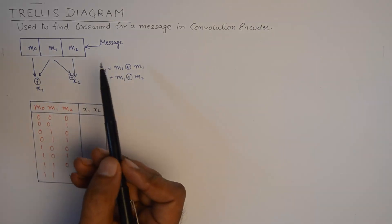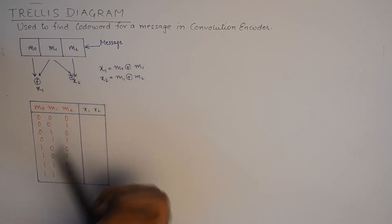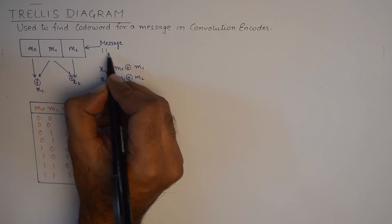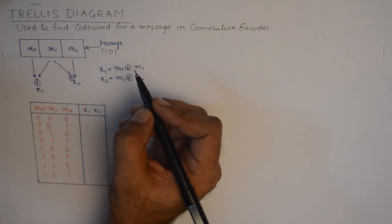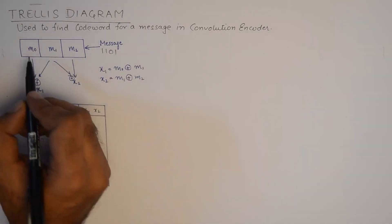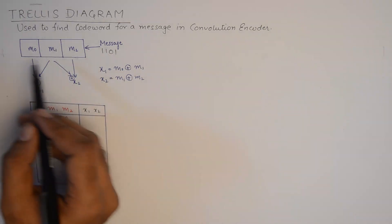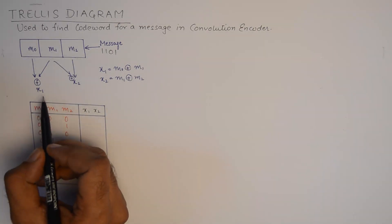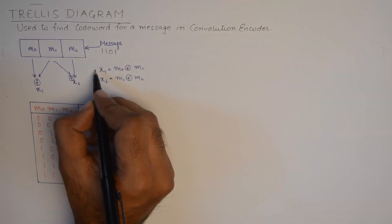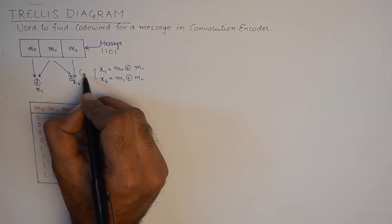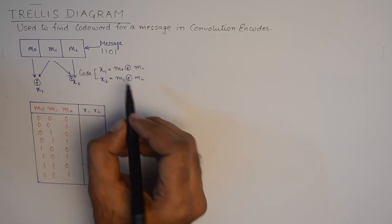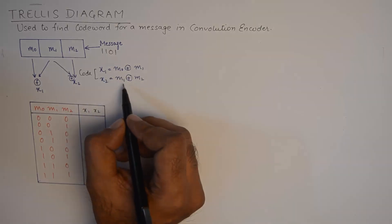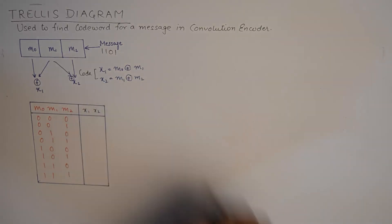This convolutional encoder accepts the message signal stream. For example, we send a message 1 1 0 1. This message goes in, and m2, m1, m0 are the previous states. The output x1 and x2, which will form the code, are: x1 = m0 XOR m1, and x2 = m1 XOR m2.